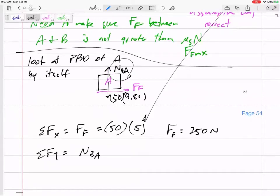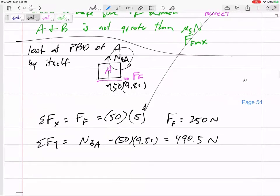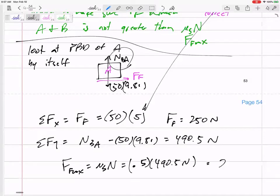N between A and B minus 50(9.81) equals 490.5. So now that I've got the N, I can find FF max equals mu S times N equals 0.5 times 490.5 equals 245.25.